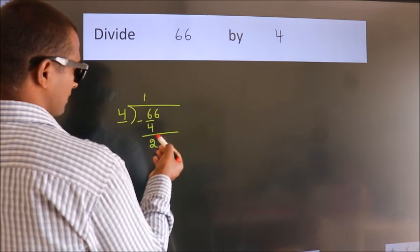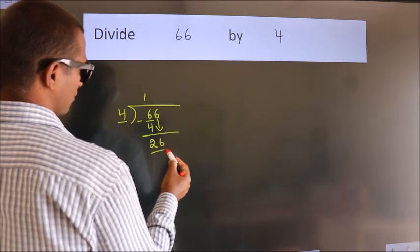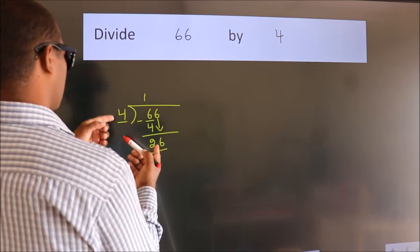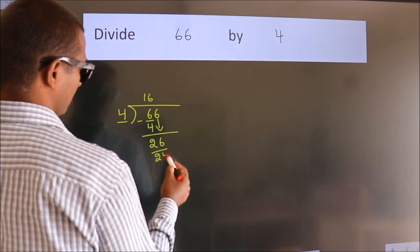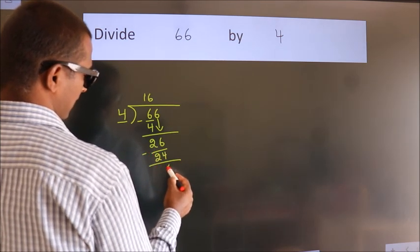After this, bring down the next number. So, 6 down. So, 26. A number close to 26 in the 4 table is 4 times 6 is 24. Now, we subtract. We get 2.